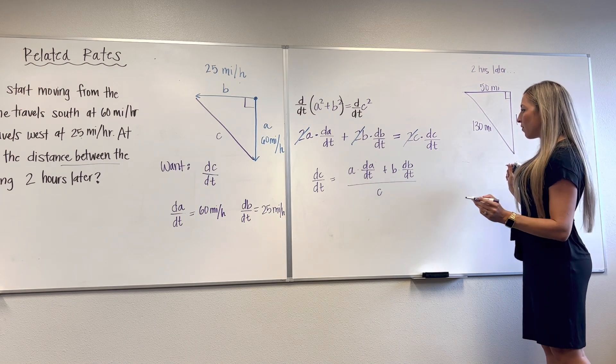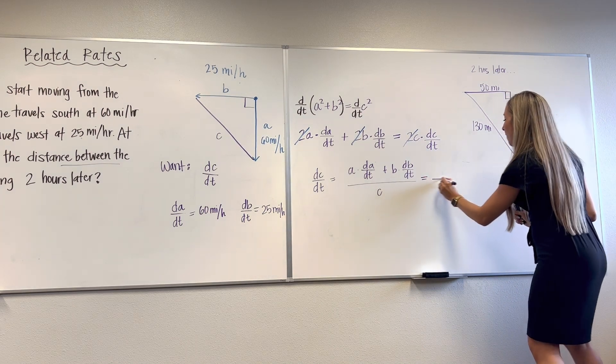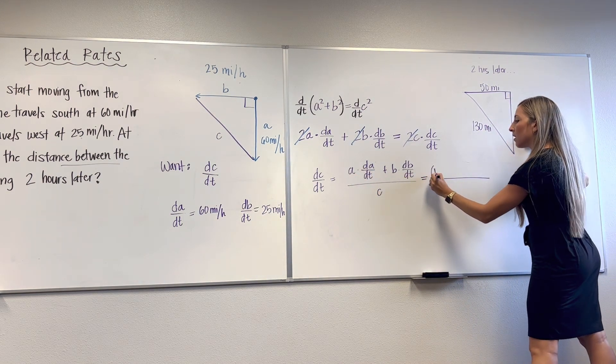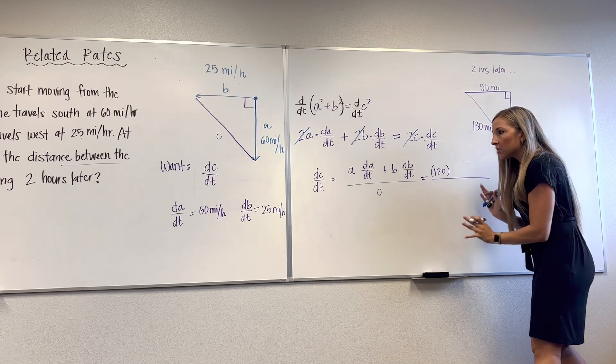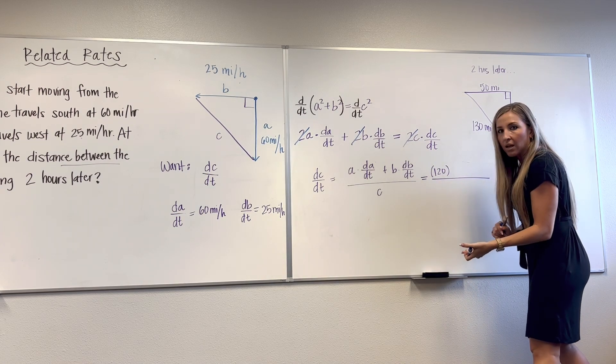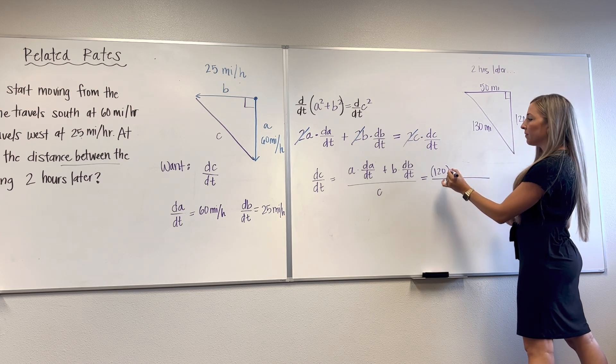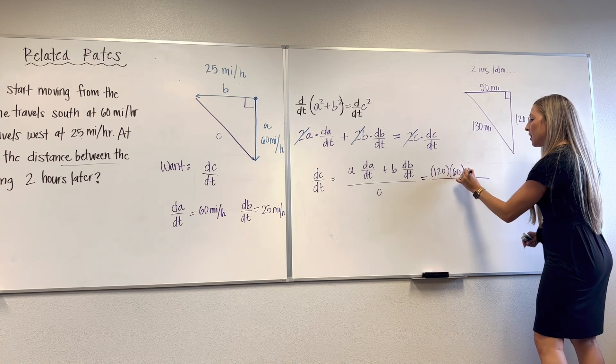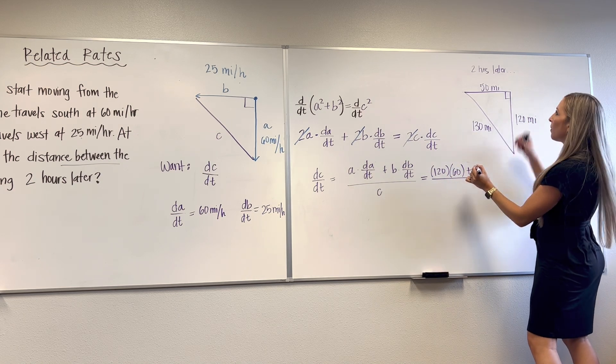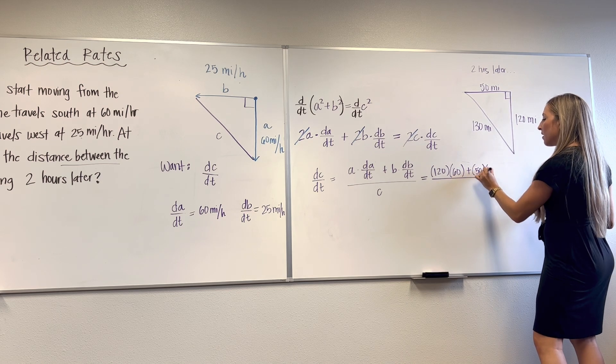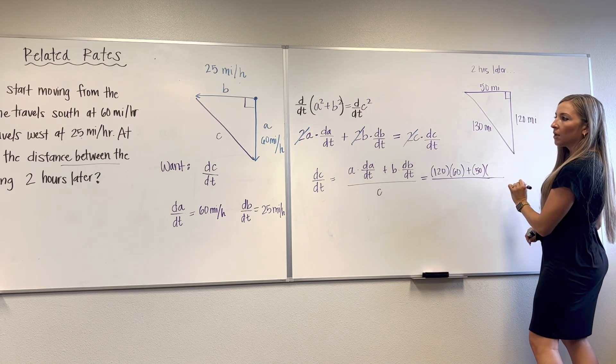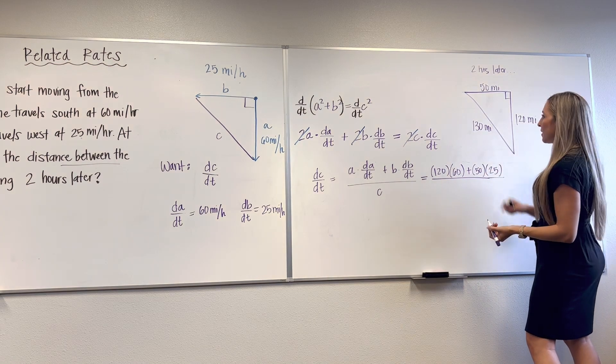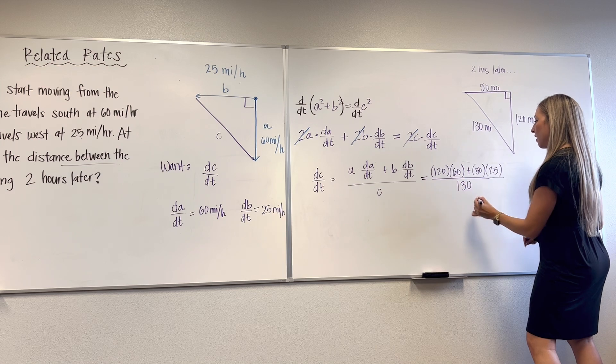So I have all my necessary information. We have here now A, which is 120. I don't like putting units in here. It's not physics. I just do it at the end. Times dA/dt. Where's my dA/dt? Over there. 60 miles per hour. Plus B. B is this one. 50. Times dB/dt is 25. 65 over C, which is 130.